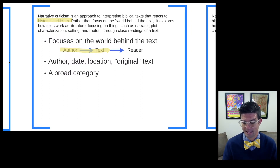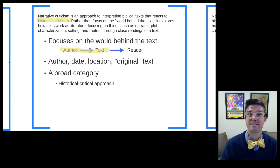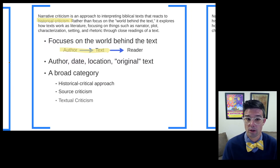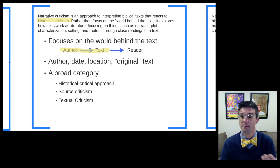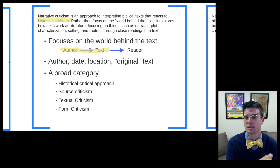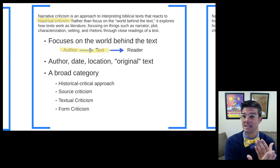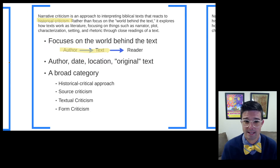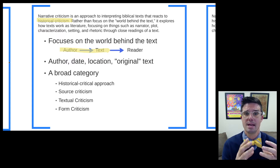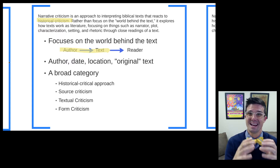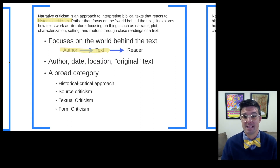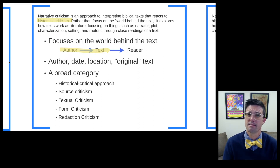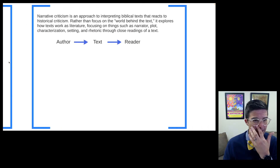Historical criticism and the world behind the text is a broad category consisting of many different kinds of approaches: source criticism, which thinks about what different sources go into making up the final form of a text; textual criticism, which looks at different manuscripts representing different versions of a gospel or letter; form criticism, which thinks about individual genres or units inside a text brought together to make up the text as a whole; and redaction criticism, thinking about how an author or editor uses and changes sources in meaningful ways.